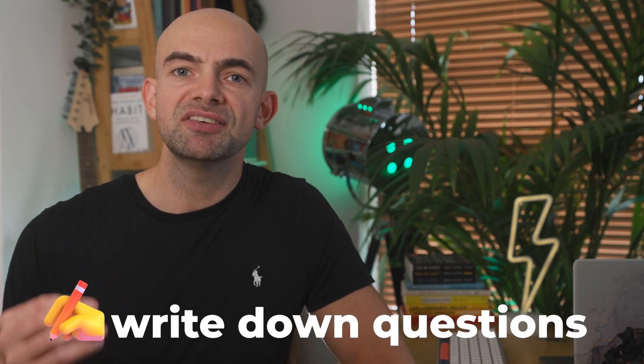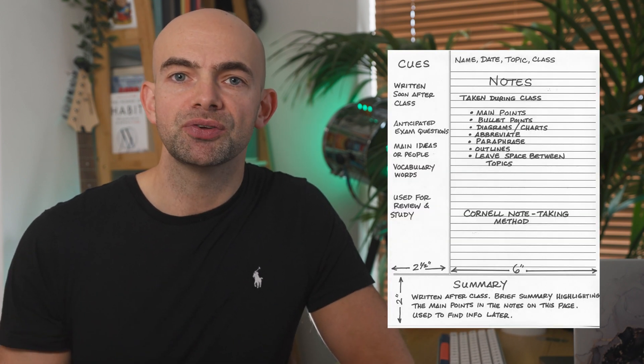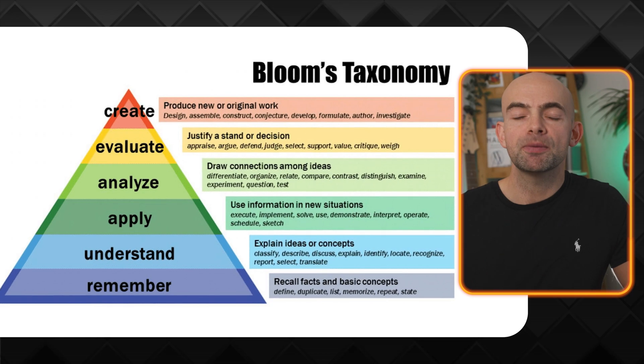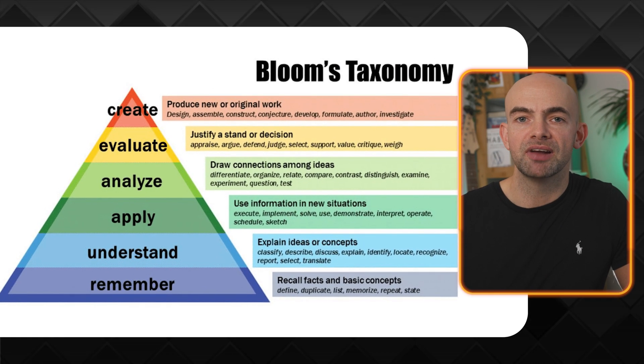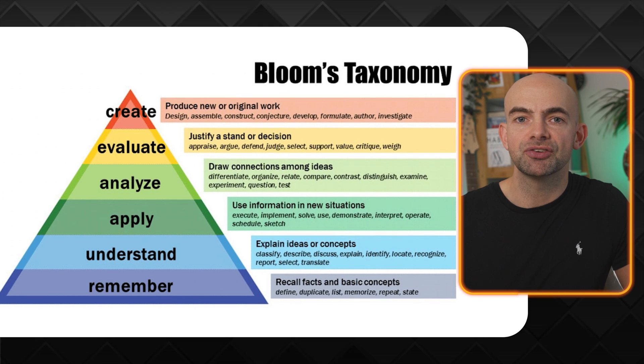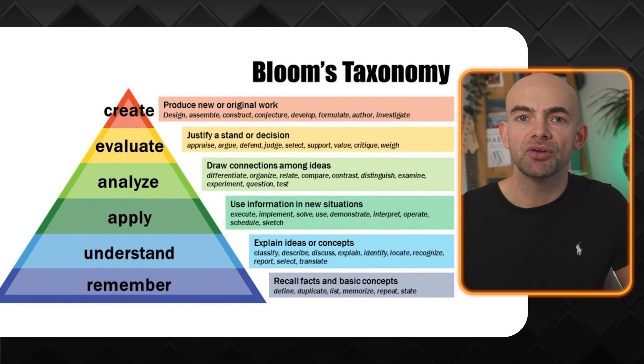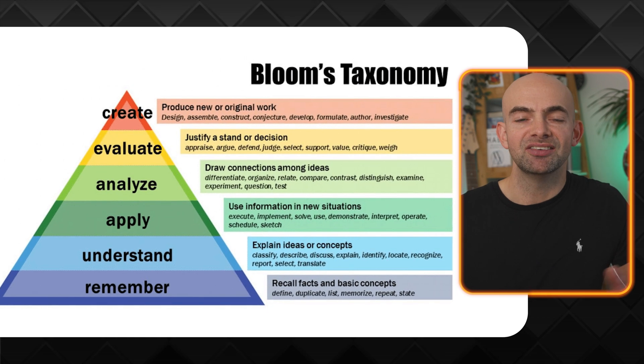A better way that employs active recall is to write down your own questions as you go through content. This method is similar to the Cornell note-taking method, where you write questions based on the information in the syllabus. Instead of passively re-reading or highlighting, you're forced to actively engage in cognitive effort to retrieve information in order to answer your questions. This strengthens connections in our brains and improves our ability to remember the information come exam time. Looking at Bloom's Taxonomy — a hierarchy of effective learning techniques — the highest-order methods are evaluating and creating. By creating our own questions, we dive deeper into the content rather than just writing it down passively.